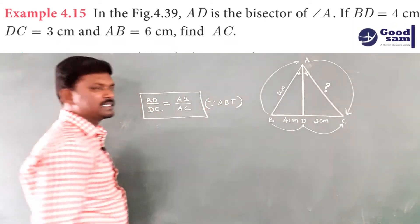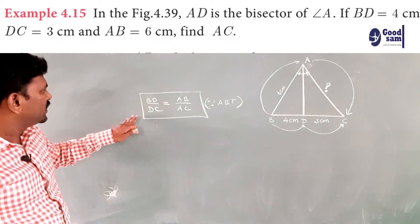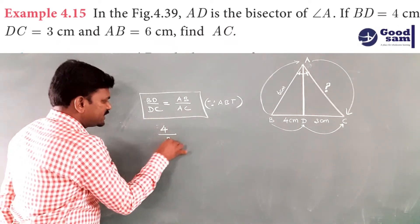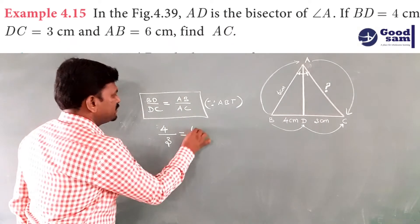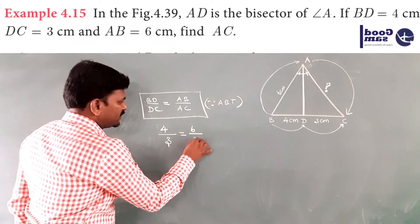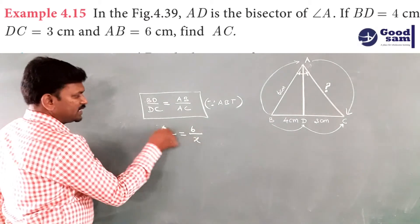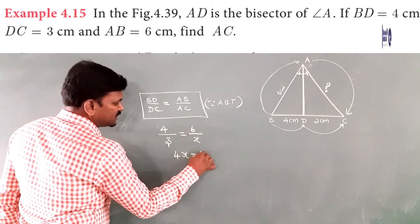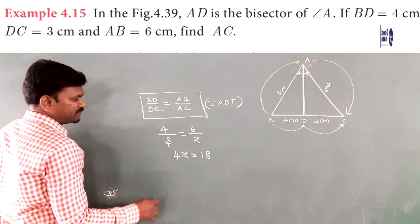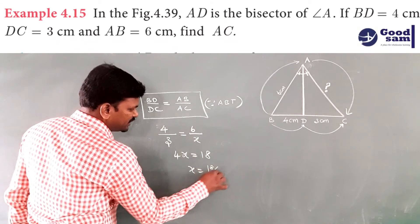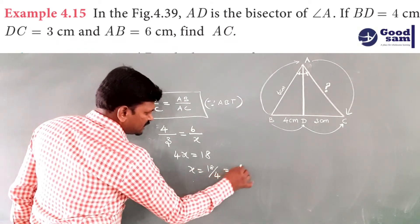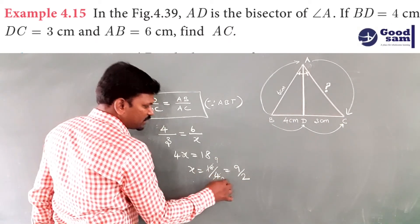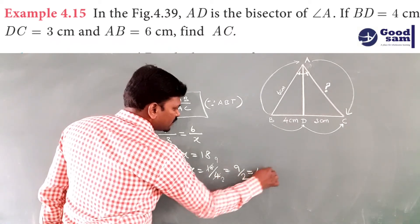We have written this. What is BD? 4. DC 3 centimeter. AB 6 centimeter and AC we have to find that is x. Then do the cross multiplication. 4 into x, 4x, 3 into 6 is 18. x is equal to 18 by 4 is equal to 9 by 2 because 9 twos are 18, 2 twos are 4, 9 by 2 that is 4.5.